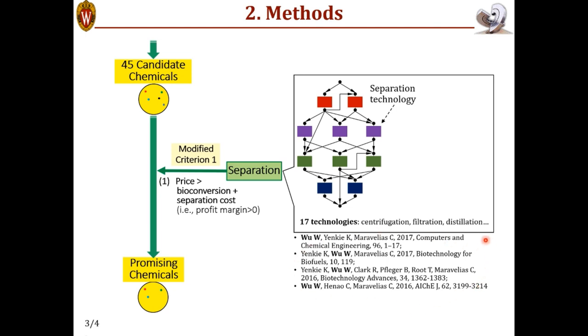Essentially, we considered all the 17 most common separation technologies like centrifugation, filtration, and distillation, as well as all the possible ways that these technologies could be used together to achieve a separation task. So all the possibilities are embedded in this so-called superstructure. And then with mathematical optimization methods, we can identify the cost minimal process for any product.